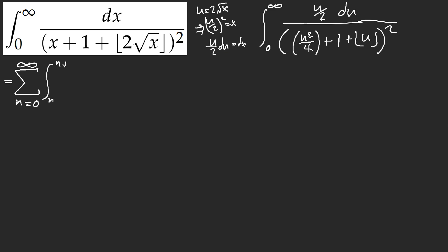So now we have n, n plus 1, u over 2 du over u squared over 4 plus 1 plus n. Now that's a constant. Now you can go ahead and let w equal u squared over 4 plus 1. Then dw is equal to u over 2 du. I know this looks illegal, but I think it's fair.